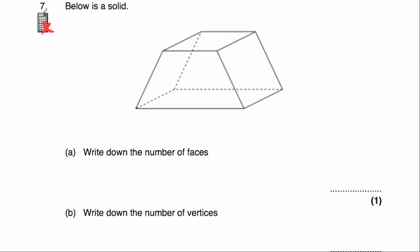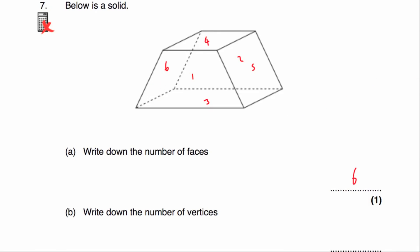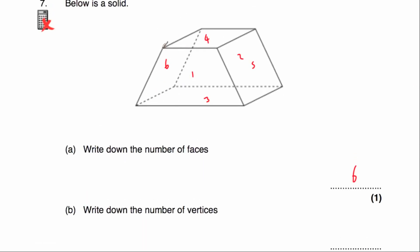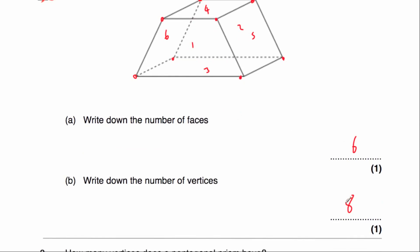Question number 7: below is a solid prism whose cross-section is a trapezium, so it's a trapezoidal prism. Part A: the number of faces — it has a face on the front and the back (that's 2), then the bottom (3), the top (4), the right-hand side and left-hand side (5 and 6) — altogether 6 faces. Part B: vertices — counting: 1, 2, 3, 4 on the top and 5, 6, 7, 8 on the bottom — so 8 vertices. It's got 6 faces and 8 vertices.